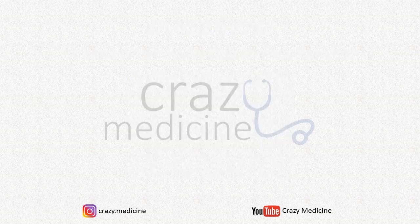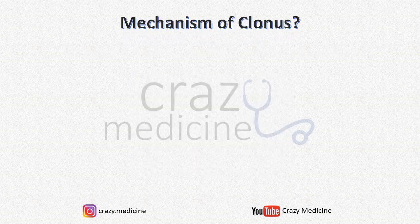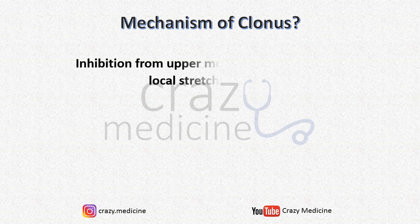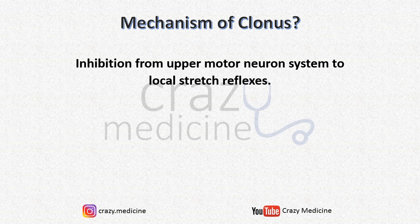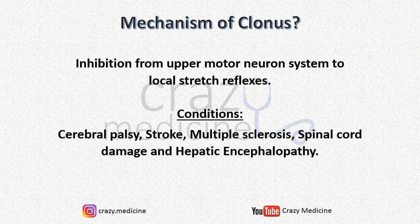What is the mechanism for clonus? It is due to inhibition of the upper motor neuron system to the local stretch reflex. It can be seen in conditions like cerebral palsy, stroke, multiple sclerosis, spinal cord damage, and sometimes in hepatic encephalopathy.